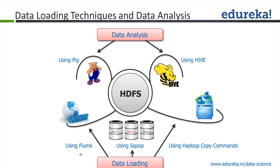Using Flume, you can connect to more streaming internet data sources like Twitter, Facebook, or the click stream produced from your web server and so on. Apart from these two, there are also Hadoop distributed copy commands which help you transfer data between multiple Hadoop clusters.